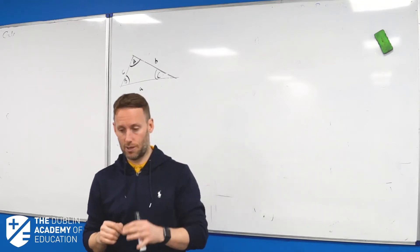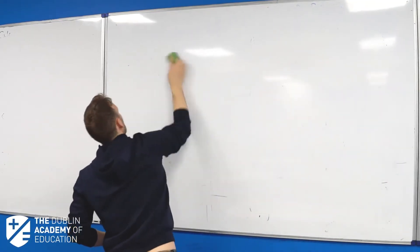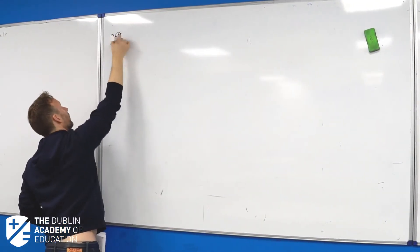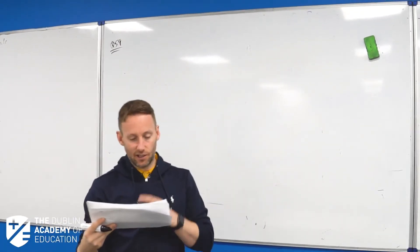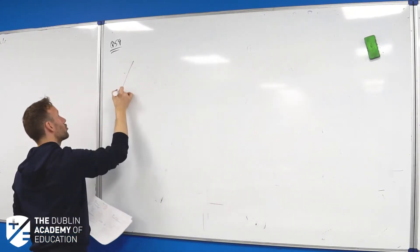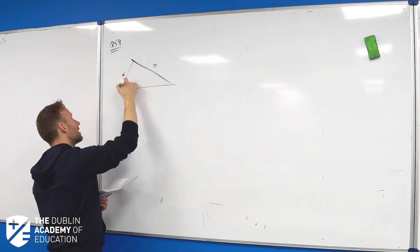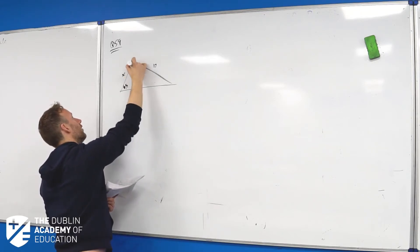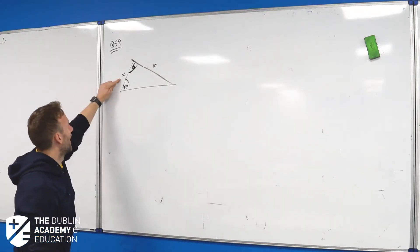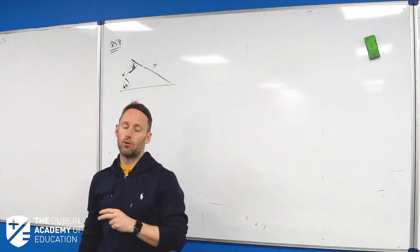Let's open up on page 87 at question 59: find the distance x in the diagram below, not to scale, correct to two decimal places. We're given a triangle where one side is x, another side is 10, and the angles are 63 and 65 degrees. Going through our strategy — it's not a right-angled triangle, so we can't use Pythagoras or sin cos tan. Can we use sine rule? We need a pair.